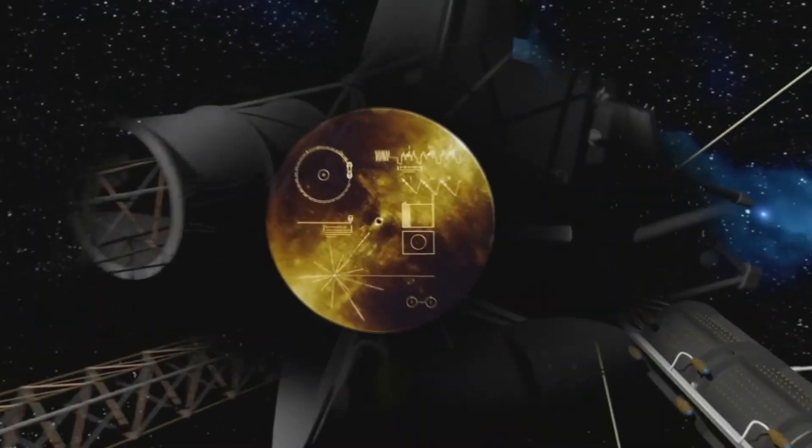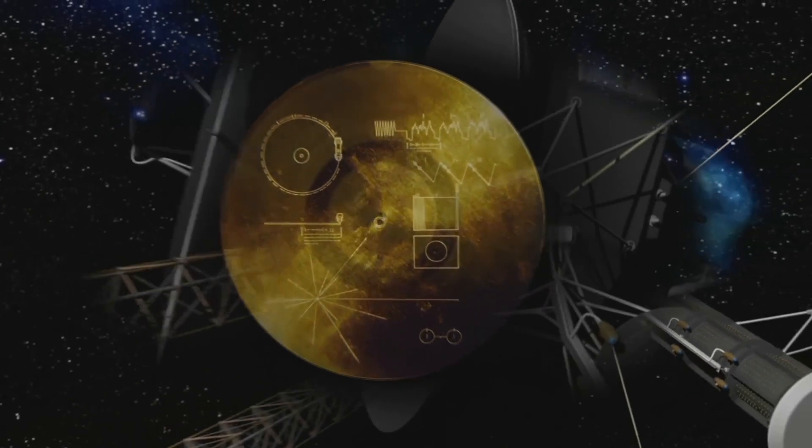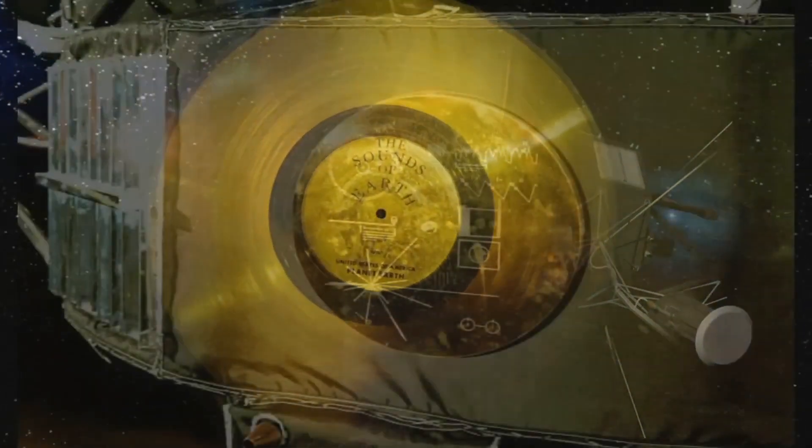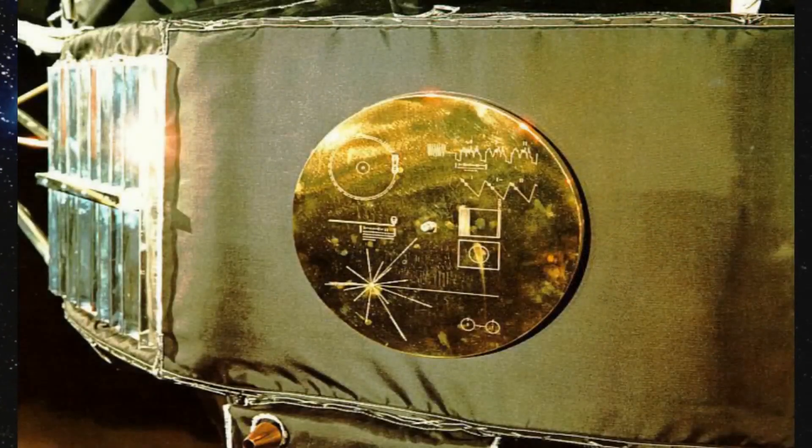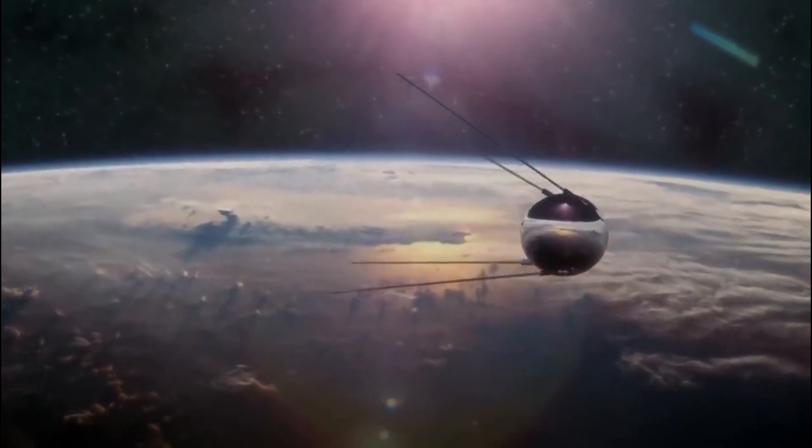The gold coating on the records acts as a cosmic message in a bottle, as its resistance to corrosion in space will allow the information they contain to remain intact for more than a billion years.